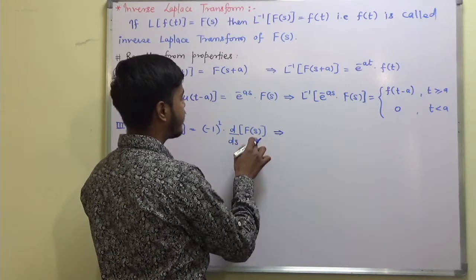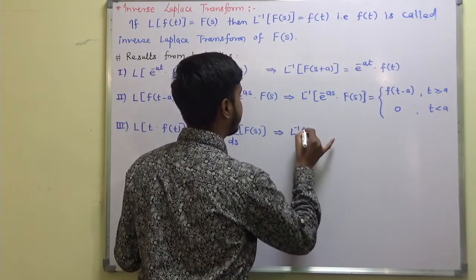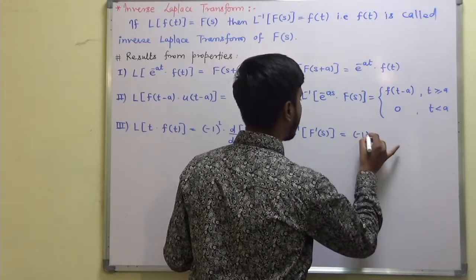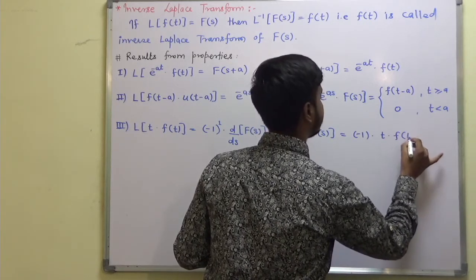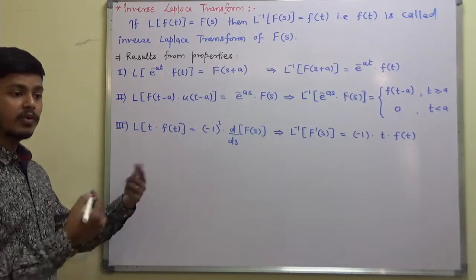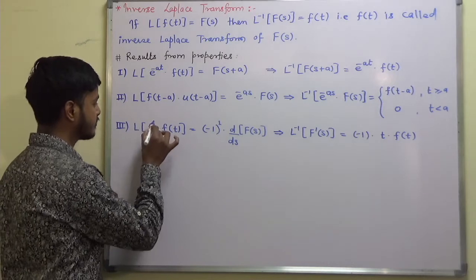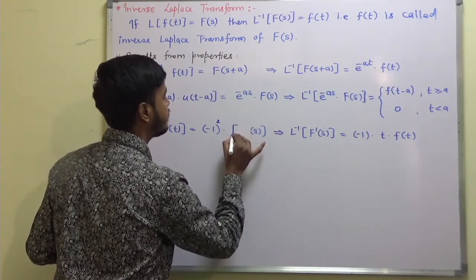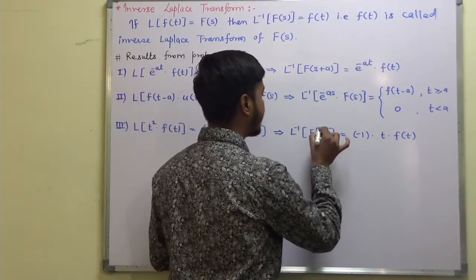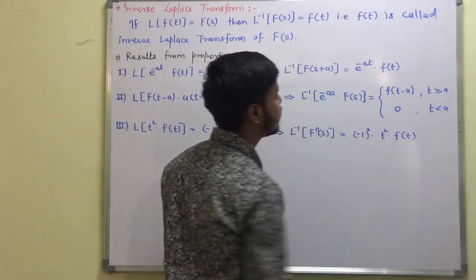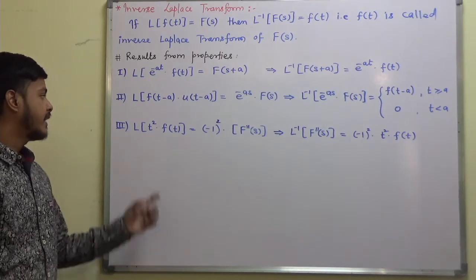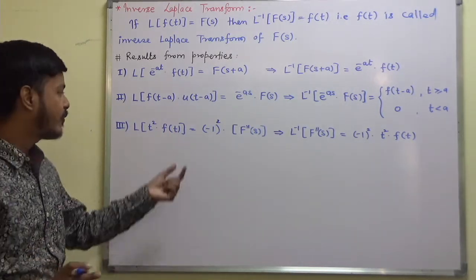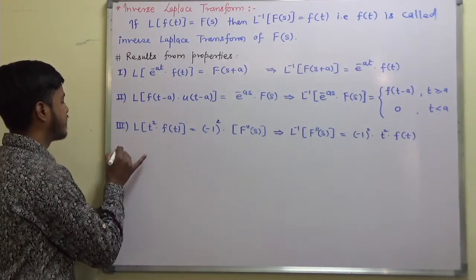We can write L inverse of F'(s) is equal to −t·f(t). Likewise, the Laplace transform of t²·f(t) is (−1)²·F''(s), so L inverse of F''(s) is (−1)²·t²·f(t). You can similarly write L inverse of t^n·f(t) using the nth derivative of F(s).